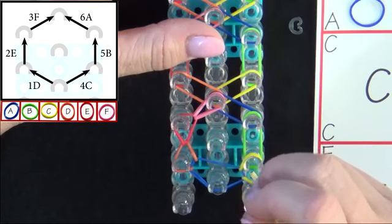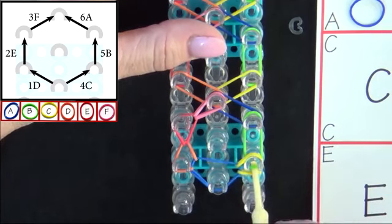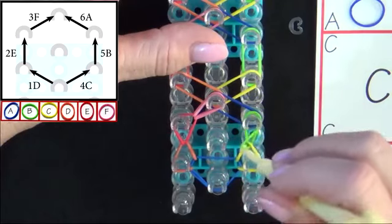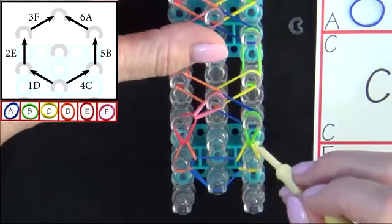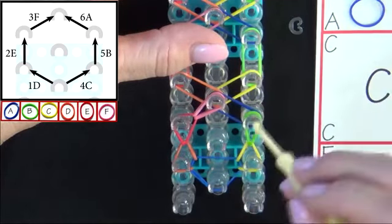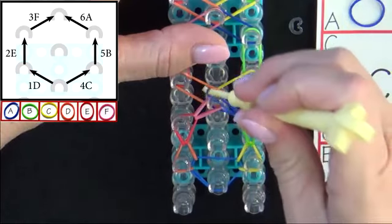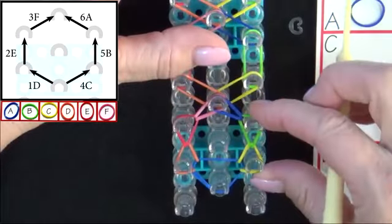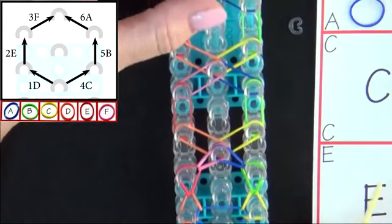Band 5B will be looping forward. Pull the C band back. Reach in and grab your B band and pull it to the forward pin. Band 6A will be looped to the center. And there we've finished looping our first hexagon. Let's move to the next one.